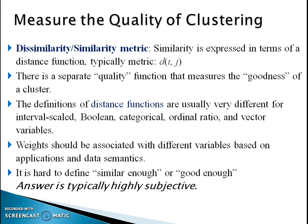How do we measure the quality of clusters? We have formulas to measure the distance between clustering groups. Dissimilarity or similarity matrices are used to find similarities, expressed in terms of a distance function Dij. There is a separate quality function that measures the goodness of the cluster. The definition of distance functions is usually very different for interval scale, boolean or categorical, ordinal, ratio, and vector variables — the value is different everywhere. Weights should be associated with different variables based on the application and data semantics. It is hard to define what is similar enough or good enough, and the answer is typically very subjective.